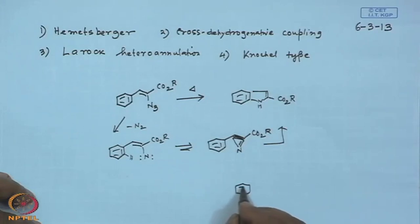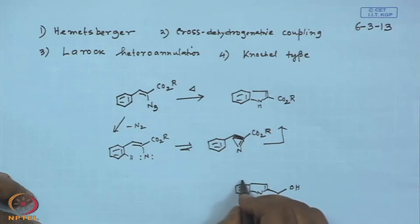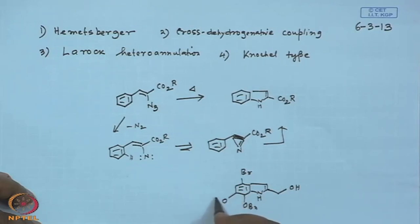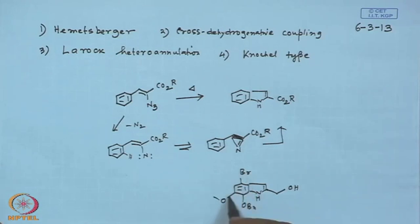Let us begin with an example. Suppose you need to make an indole derivative where at the 2-position you have a hydroxymethyl group, a bromo substituent, and a benzyl protecting group — a heavily substituted, 1,2,3,4-tetrasubstituted indole derivative. How do you make it?